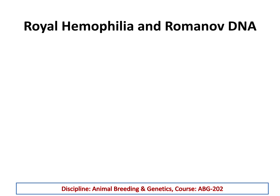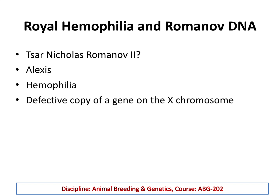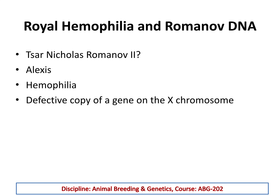We begin with Royal Haemophilia and the Romanov family. You might have heard of Tsar Nicholas II — he was a historical figure, the Russian tsar. He had a son named Alexis, who was suffering from haemophilia, a genetic disorder caused by a defective copy of a gene on the X chromosome.